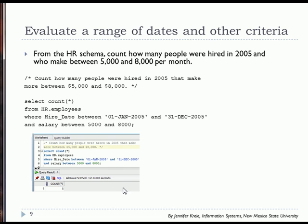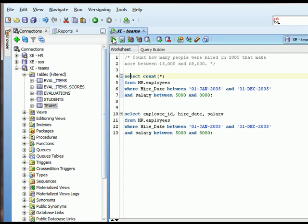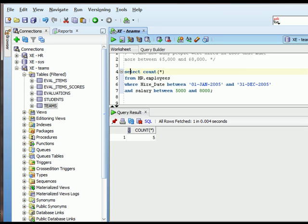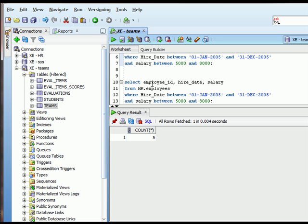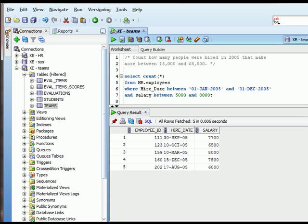Whenever you do something like this, even though the main purpose is to get the count, you should probably do a modified SQL statement to verify your output. I've pasted in the original statement and I'll execute that to get our count of five. Below that I've modified this SQL statement and added columns so I can actually see the data. I can run that to verify by looking at the data within the columns to make sure things are correct. Here I see hire dates in 2005 and salary values between 5,000 and 8,000. Whenever you're doing a count, you probably want to run a variation on that command and do a visual check to see if the output seems accurate.